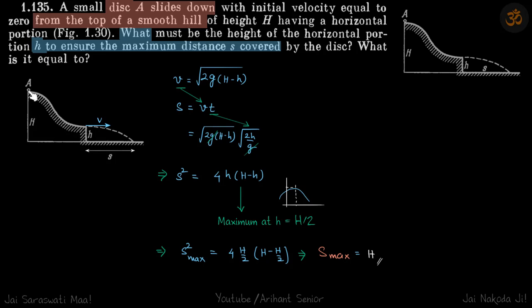A particle is released from here. We need to find the value of small h such that this distance s is maximum. So this distance s is v into t, where v is the velocity when it is launched in air from this point.